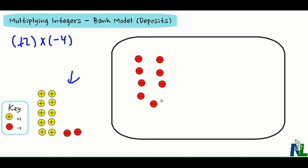You can see that inside my bank, I have two sets of negative 4 tiles, or negative 8 tiles altogether. So positive 2 times negative 4 equals negative 8.